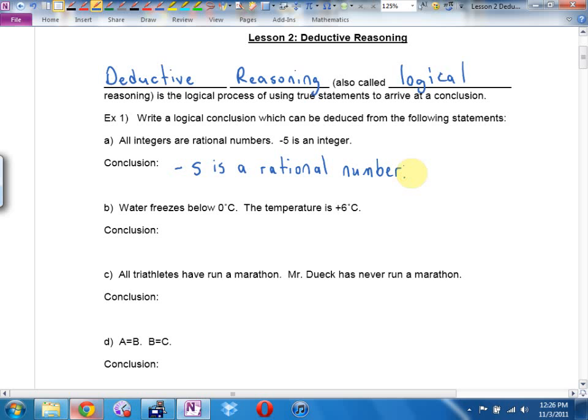Negative five is a rational number. How do I know? Well, all integers are rational numbers, and it says that negative five belongs to the integers, which means it automatically belongs to the rational numbers.